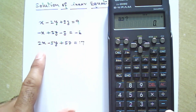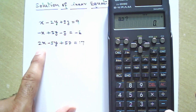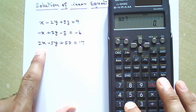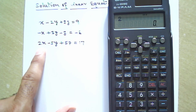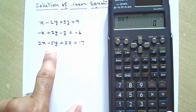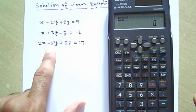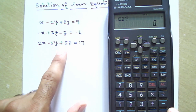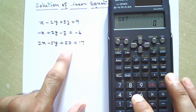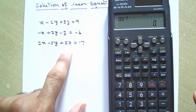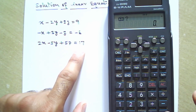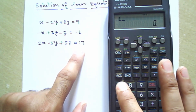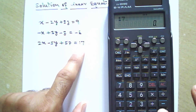Now for the last equation: a3 is 2 — press 2 then equal. The value of b3 is minus 5 — press minus 5 then equal. Then c3 is 5 — press 5 then equal. The last value d3 is 17 — press 1, 7 then equal.